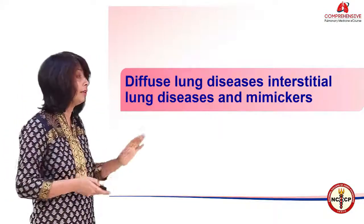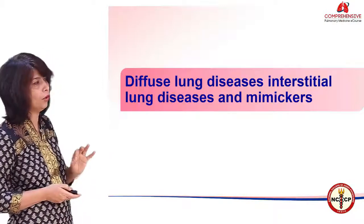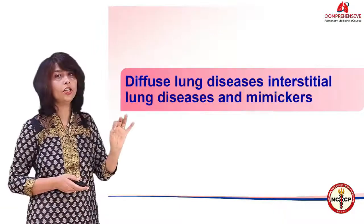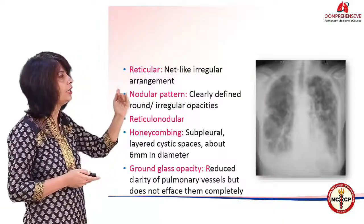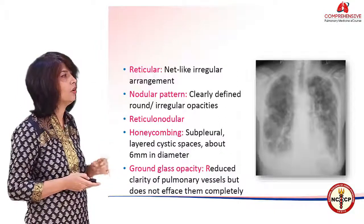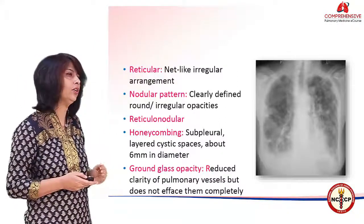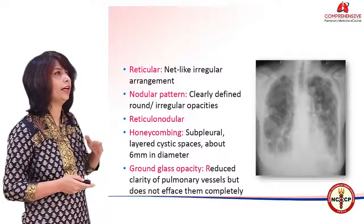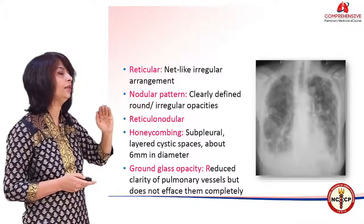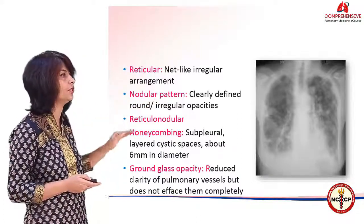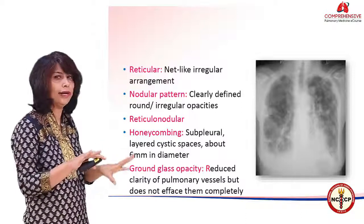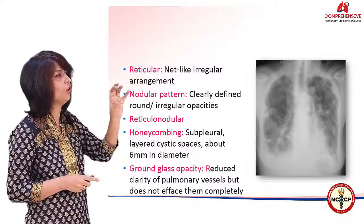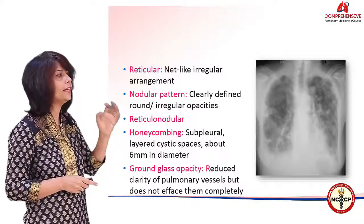The terms ILD and DLD are often used interchangeably. When to suspect interstitial lung disease on a chest radiograph: if you see a reticular pattern — unlike the clear-cut bands of atelectasis or the fibrotic bands seen with pleural thickening — a reticular pattern is more net-like, more like a spider web. You may also have some nodules thrown in.